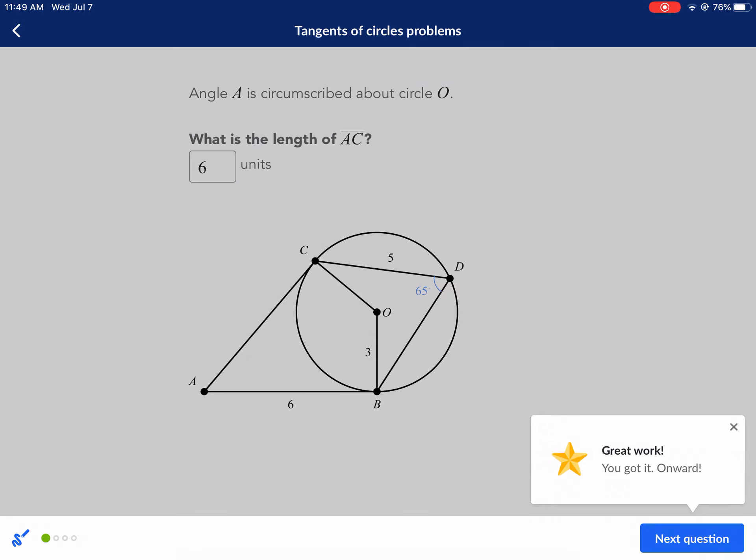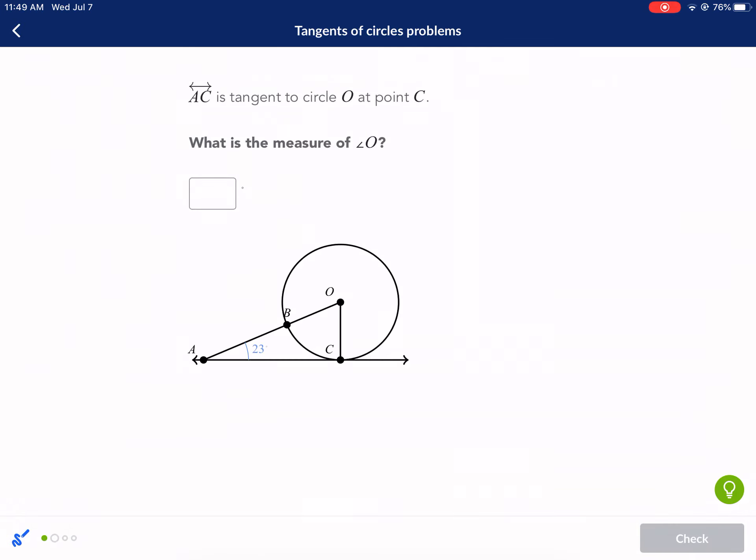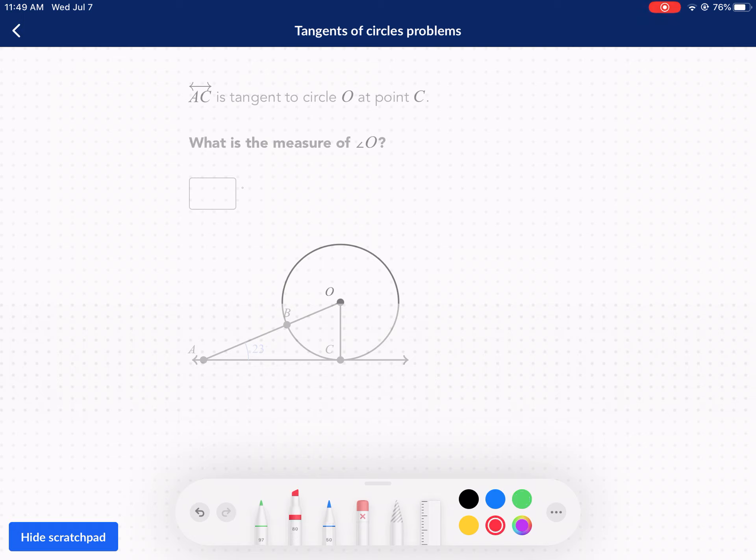So you got it. Onward. Next question. AC is tangent to circle O at point C. What is the measure of angle O? All right. So here we go again. Now let's first identify our tangent line. Our tangent line, as it says, is AC. So we have AC is our tangent line. Circle O.